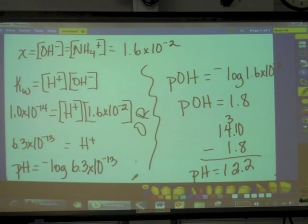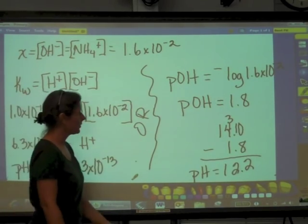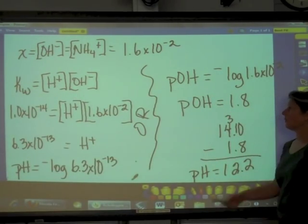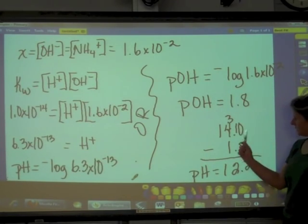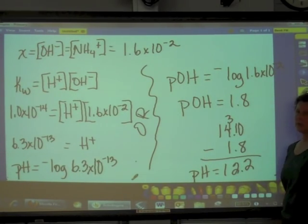But the bottom line is, the most important thing you've got to keep in mind, is that when you're doing a weak base problem, your X that you solve for using your ICE diagram, it's going to be the hydroxide ion concentration, not the hydrogen. And then you have to convert it to hydrogen ion concentration, one of two ways. Either using the Kw and getting there, or finding the pOH from it and then subtracting that from 14 to give you pH.